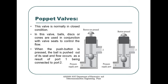These are the construction symbol and the graphical symbol of a 2x2 poppet valve. Let's understand the poppet valve operation. This valve is normally in a closed condition. In this valve, the ball, discs, or cones are used in conjunction with the valve seats to control the flow. When the push button is actuated, the ball is pushed out of its seat and the flow occurs; as a result, port 1 is connected to port 2.